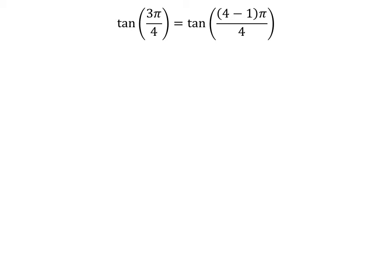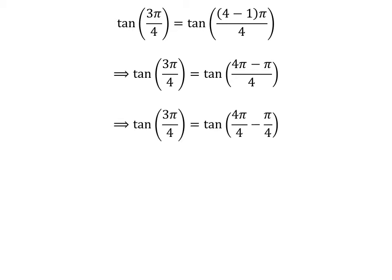We know 4 minus 1 is equal to 3. So tangent of 3π/4 is equal to tangent of (4 minus 1) times pi upon 4. Expanding the numerator, we get tangent of 3π/4 is equal to tangent of (4 times pi minus pi) upon 4. The fraction 3π/4 can be expressed as the difference of two fractions 4π/4 and π/4. Cancelling out the common factor gives us tangent of 3π/4 is equal to tangent of (pi minus π/4).